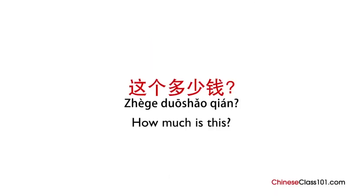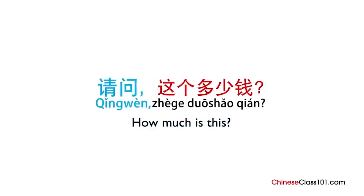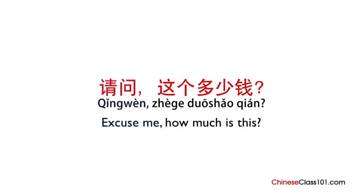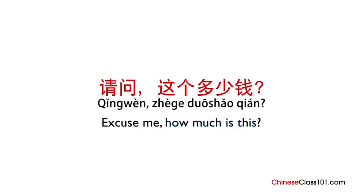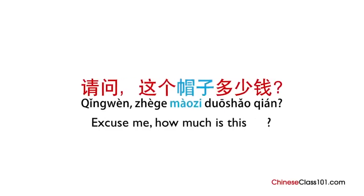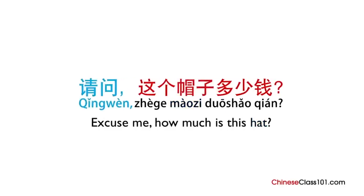You see something you like and want to ask the shopkeeper how much it costs. The first thing to say is 请问 — excuse me. Then: 这个多少钱? If we want to be more specific, just add the noun. For example, 帽子 means a hat: 请问,这个帽子多少钱? — Excuse me, how much is this hat?